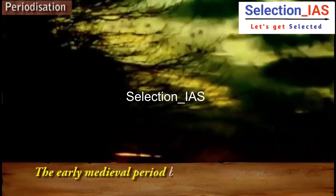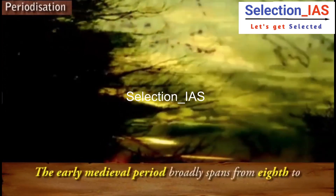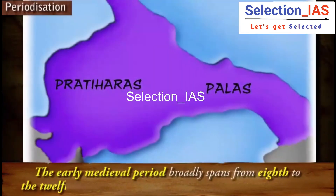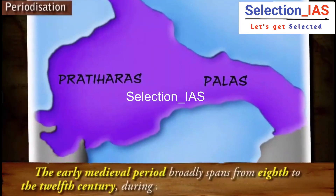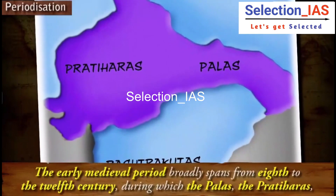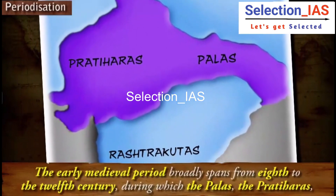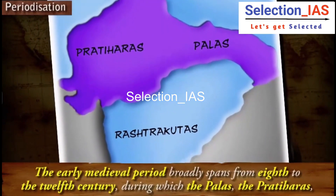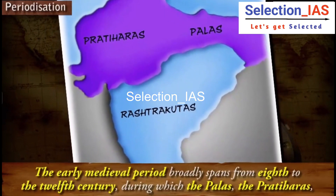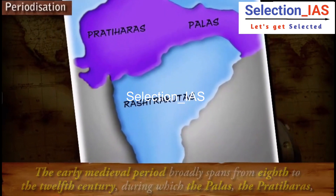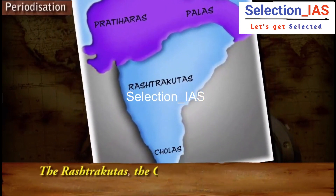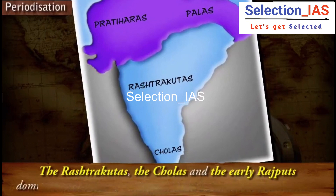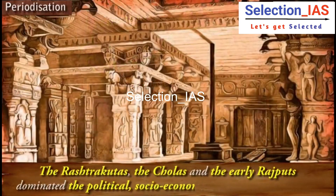The early medieval period broadly spans from the 8th to the 12th century, during which the Palas, the Pratiharas, the Rashtrakutas, the Cholas and the early Rajputs dominated the political, socio-economic and cultural patterns.